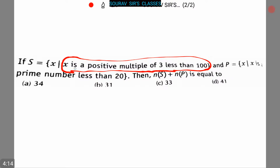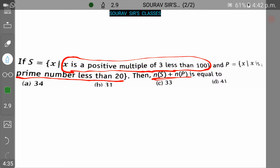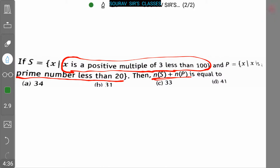Here is our next question: S is the set where x is a positive multiple of 3 which is less than 100, and P is the set where x is a prime number less than 20. We have to find n(S) + n(P). Four options are also given.